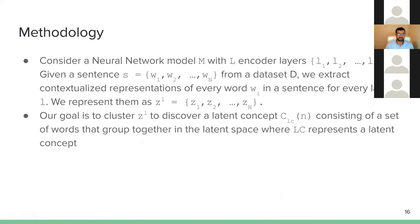More formally: we have a neural network model M with L encoder layers, a sentence S from a dataset, and all words in it. For every word, we extract the contextualized representation from each layer, represented as Z_L. Our goal is to cluster Z_L to discover latent concepts, which we refer to as C — latent concept — and it will contain the number of words in each cluster.